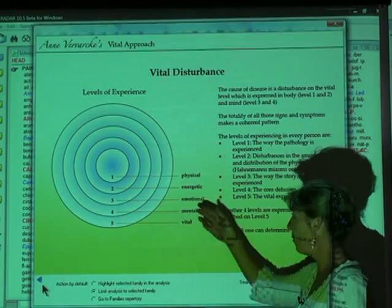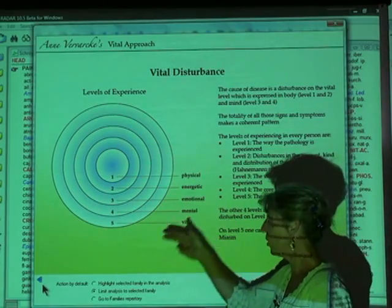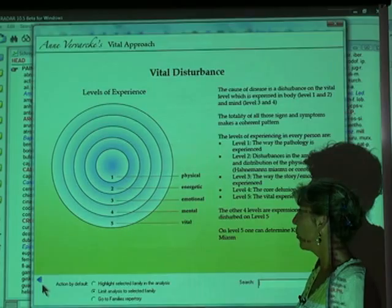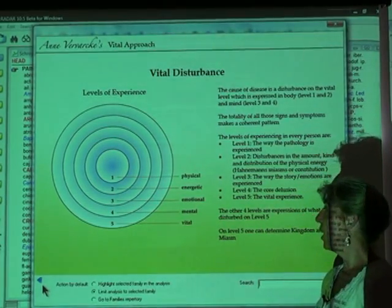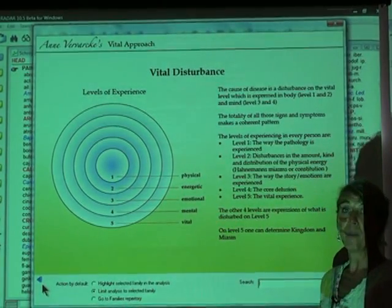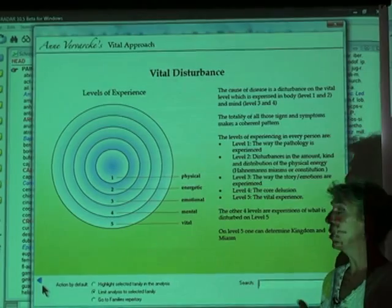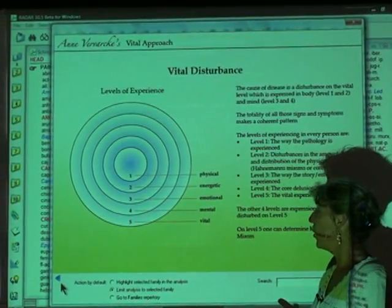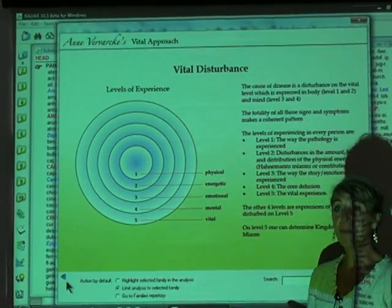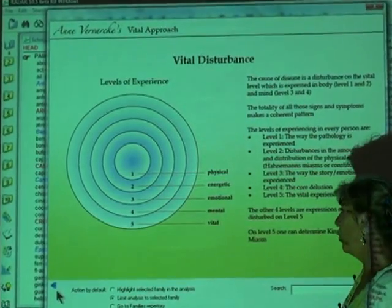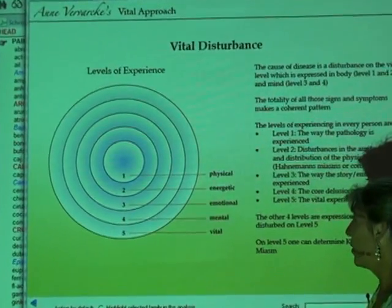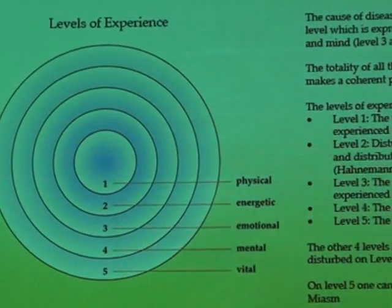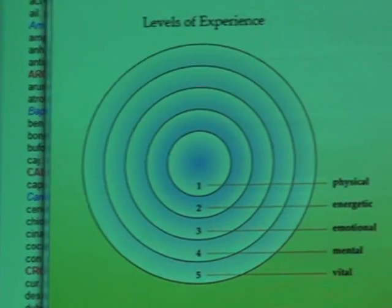The emotional level, or our third invisible body, is where our emotions are situated — our common human emotions: anger, grief, sadness, guilt, shame — all these common traits, in different degrees and different mixtures in every person.